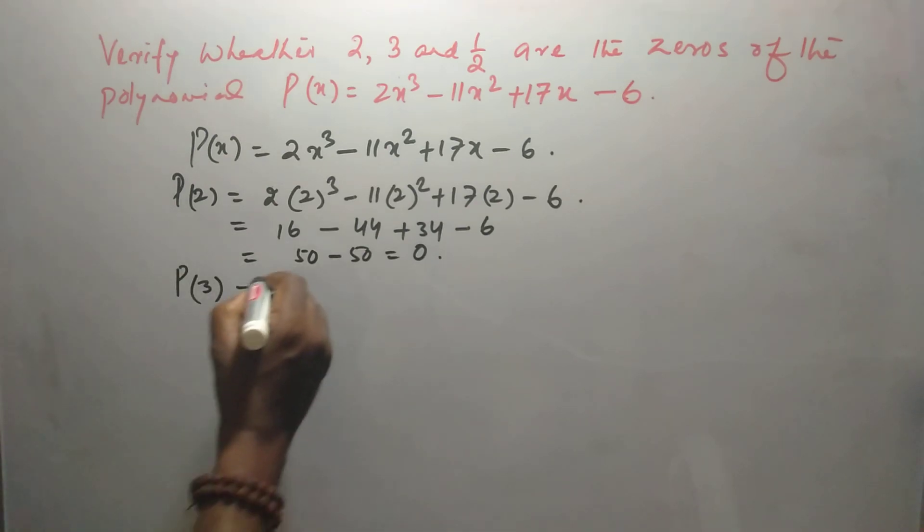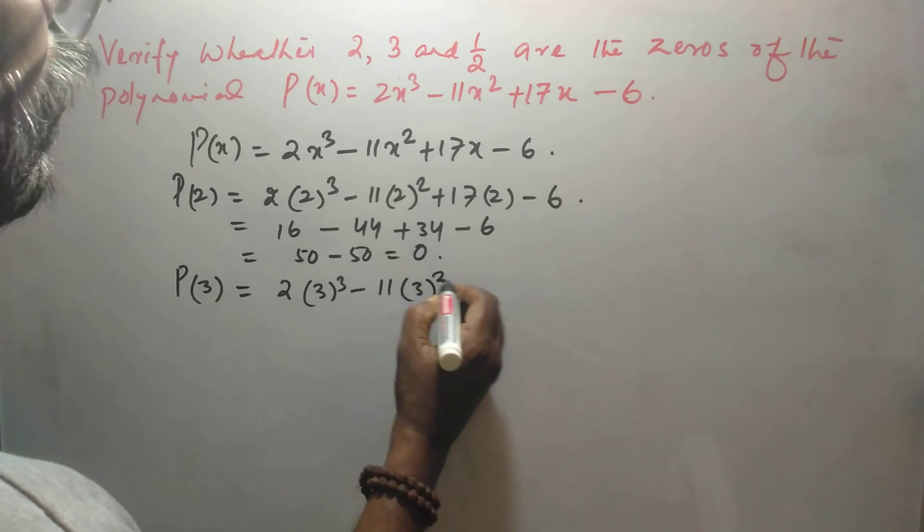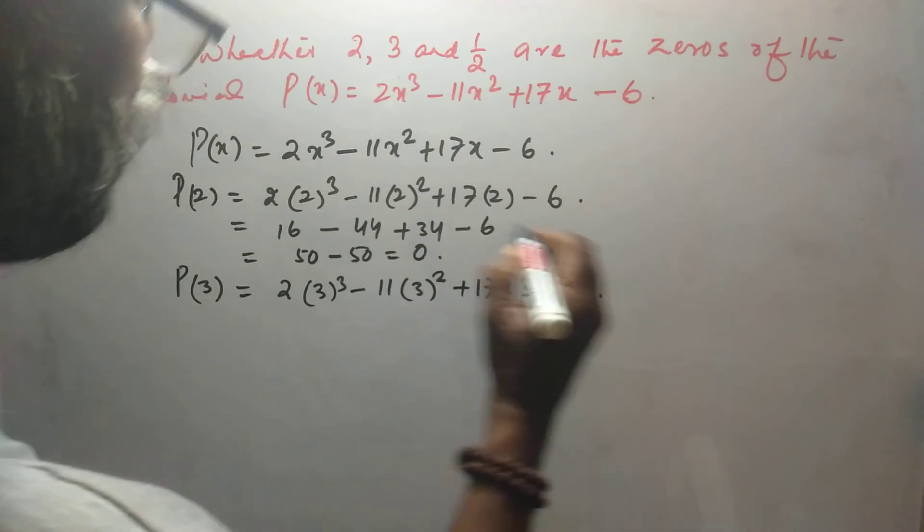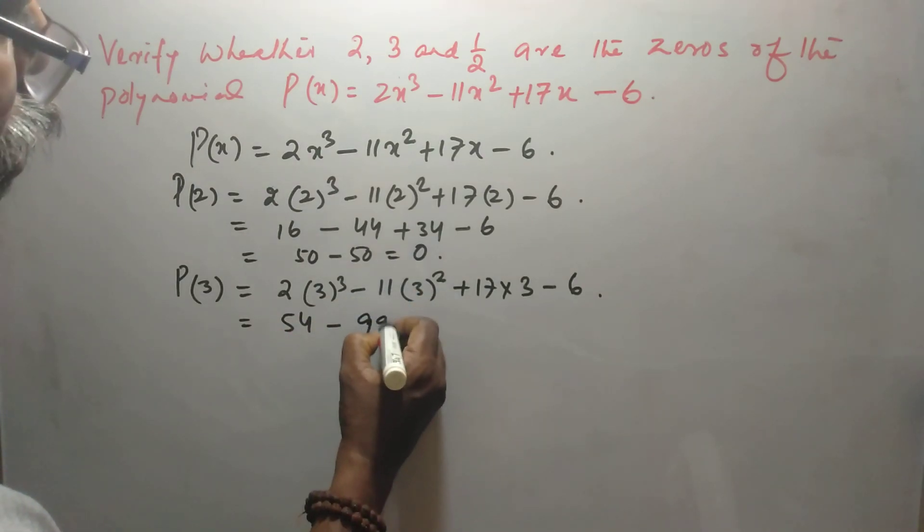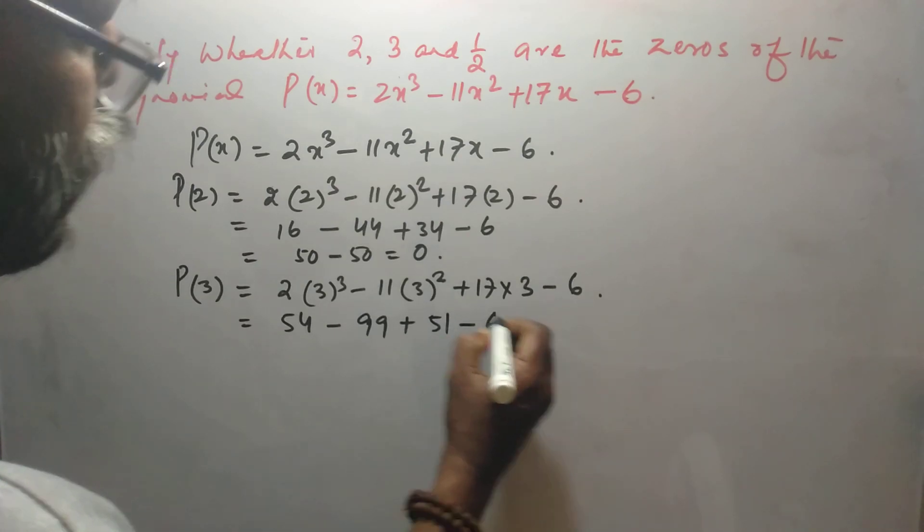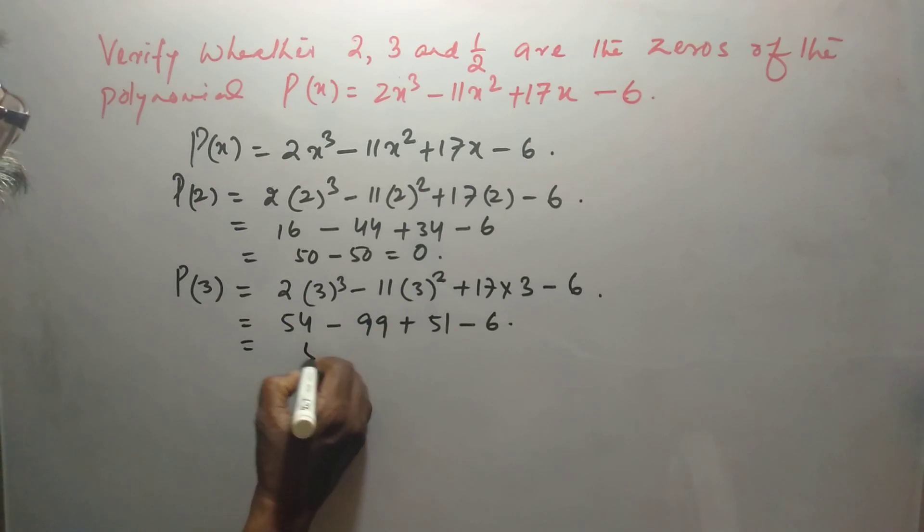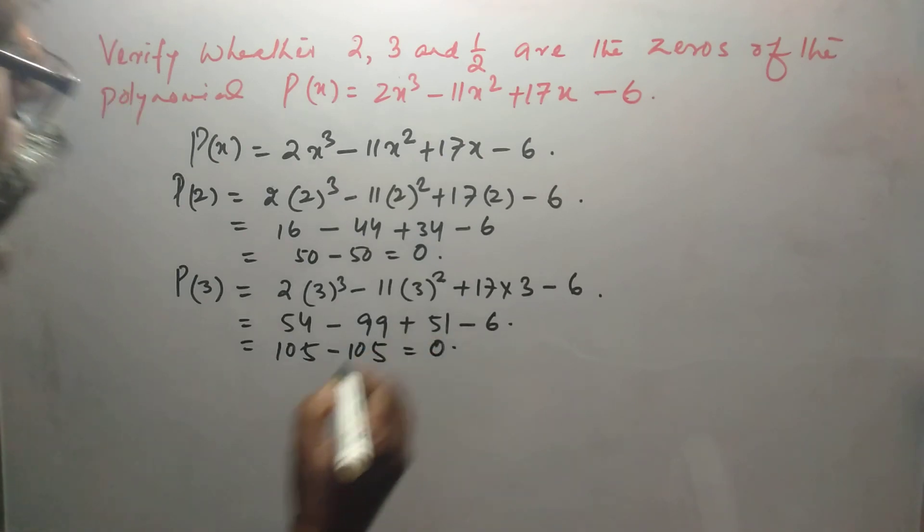This one is equal to 2(3)³ - 11(3)² + 17(3) - 6. This is 54 - 99 + 51 - 6 = 0. So this is 105, 105 = 0.